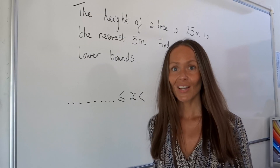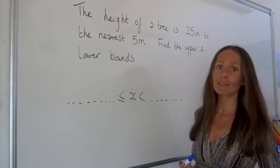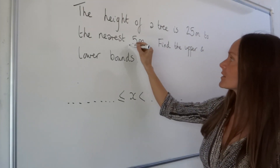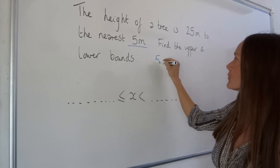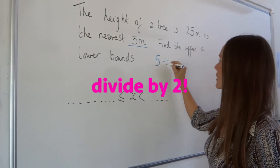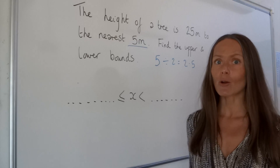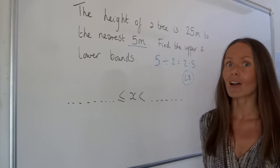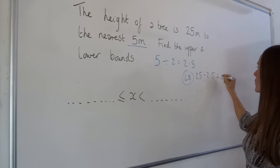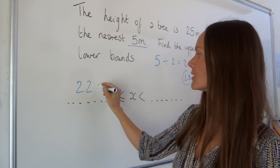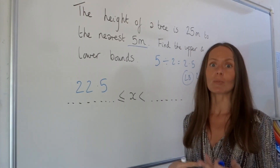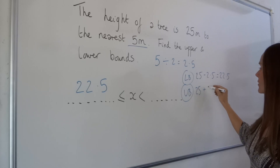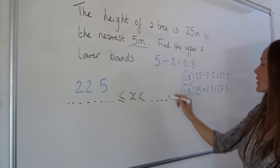In this final example, the height of a tree is 25 metres, measured to the nearest 5 metres — find the upper and lower bounds. Take the number you're rounding to — this time it's 5 — and divide it by 2: 5 divided by 2 is 2.5. To find the lower bound, subtract 2.5 from 25: 25 minus 2.5 equals 22.5, which is the lower bound. For the upper bound, add instead of subtract: 25 plus 2.5 gives 27.5, which is the upper bound.